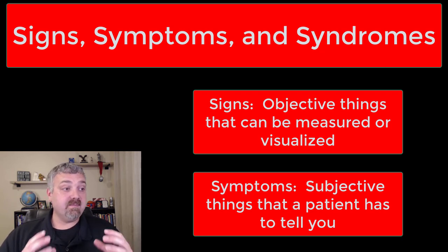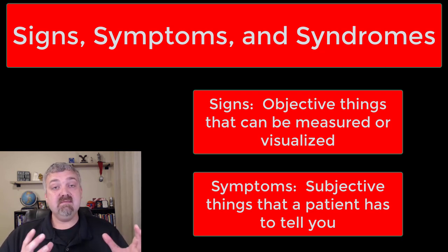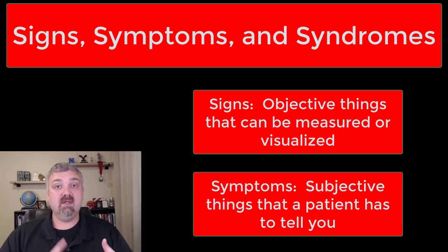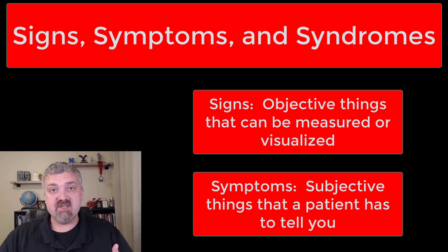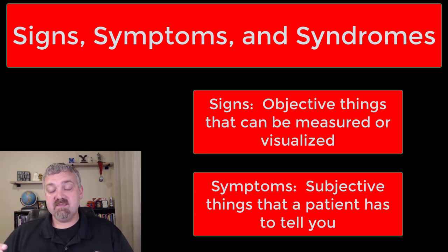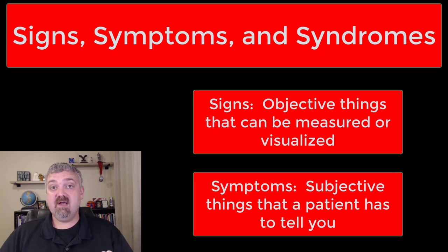Signs are something that can be directly measured or observed. So this would be maybe loss of range of motion, or lab values, or abnormalities on an EKG. These would be examples of signs.